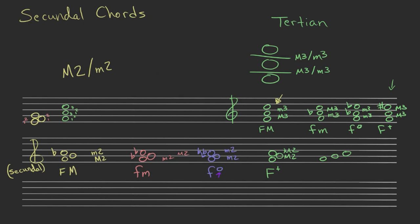So these are secundal chords — more precisely, secundal triads, because they're made of three notes stacked in seconds. You can keep stacking in seconds to build larger chords, but we won't cover that right now. In the next video, we'll see how these chords relate to one another over a major scale.